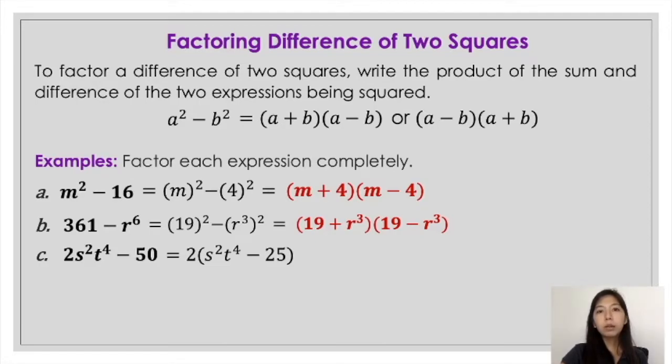Again, we took out the common factor, which is 2. By doing that, notice that the expression inside this parenthesis is already a difference of 2 squares, because the first term is already a perfect square. Same goes for the second term. So when you factor this out, do not forget that you have this 2 outside the quantity.